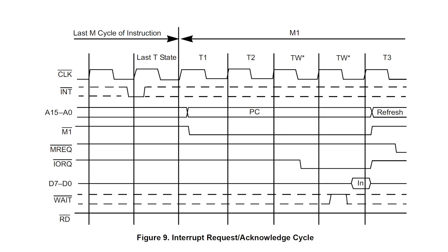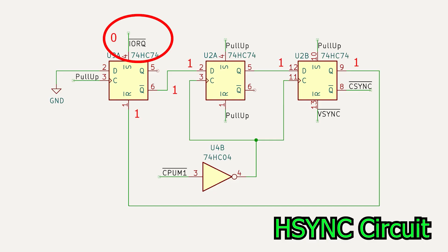Then, as part of the interrupt acknowledge sequence, IO-REC's asserted. This is the set input to the leftmost flip-flop, so its Q-bar output instantly goes to zero.